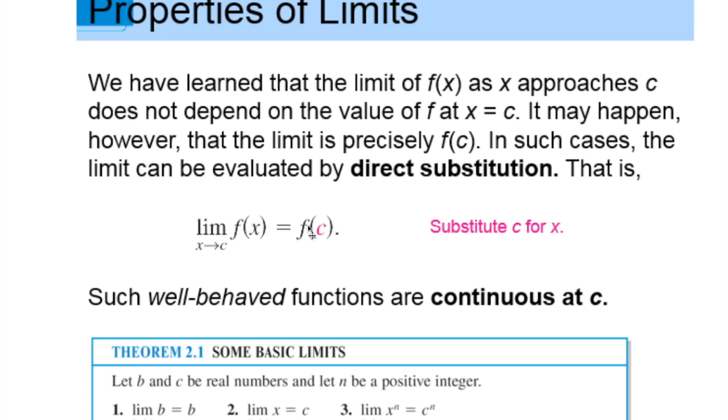Such well-behaved functions are continuous at c, so therefore there's no holes, no breaks. It's really easy for us to calculate those just by using direct substitution. And this is the method that I would always try to do first. If it doesn't work then you would go and try to find other ways.